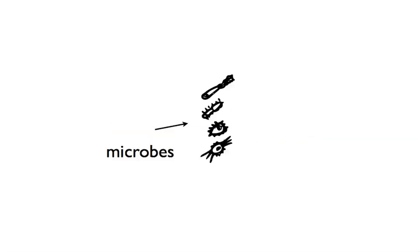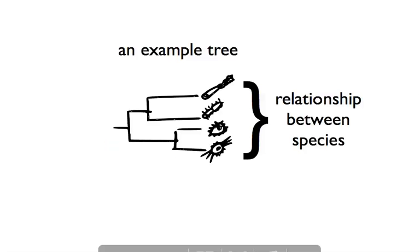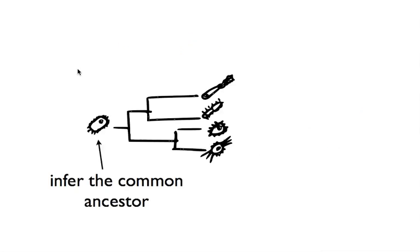Imagine we have four microbes. If we estimate the phylogeny of these microbes, we can see the relationships between them and see how the microbes have diverged over time. Given this tree, we can also infer the common ancestor of these microbes. This is the root of the tree.